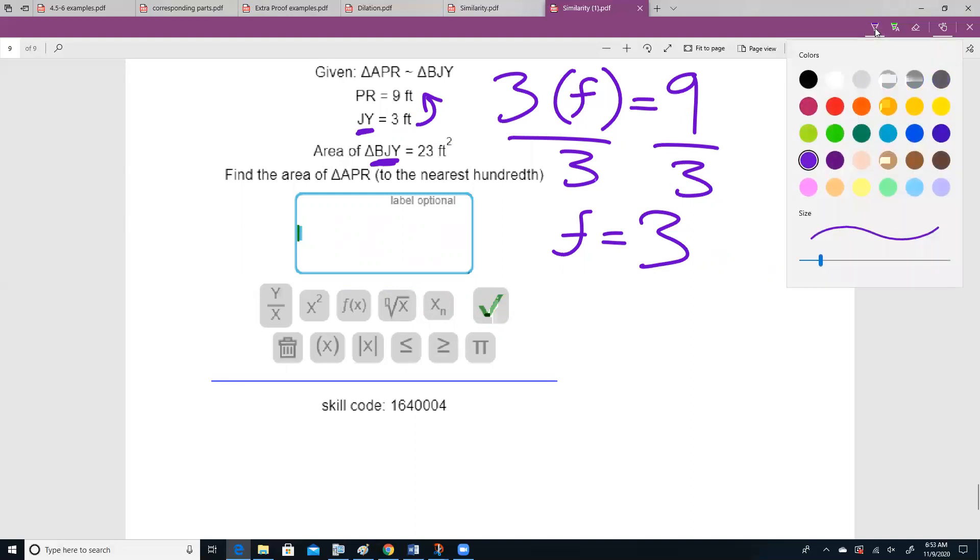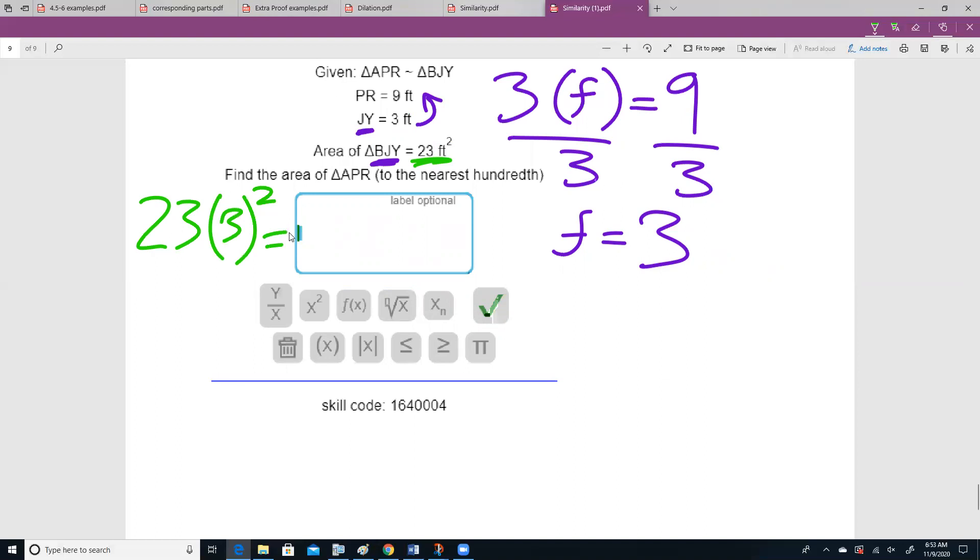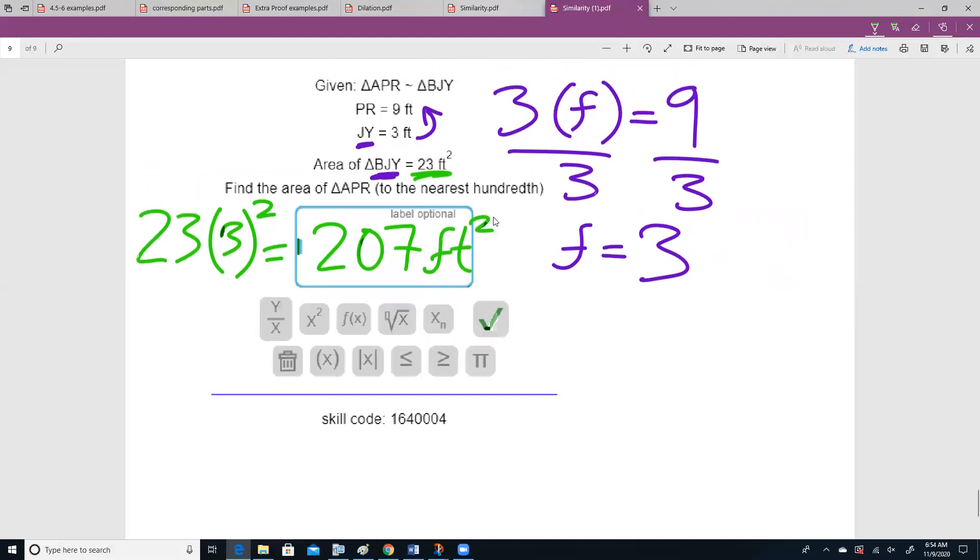And we're going to convert our area over here. That 23 times our scale factor squared will give us our answer. And that will give me 207, a nice whole number, feet squared. And that's our last example. And this is how we solve for perimeter, area, and missing sides of similar triangles.